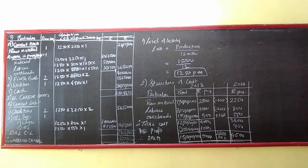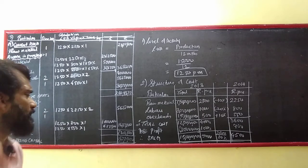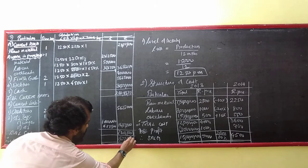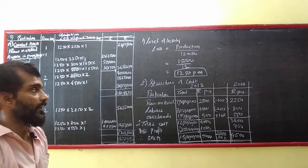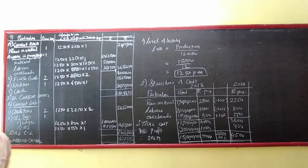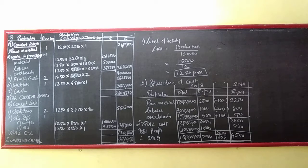The final answer for net working capital is 1,67,81,250. If you are not able to understand what I have written, you can score well in all 3 topics we have covered. Practice well, take care.